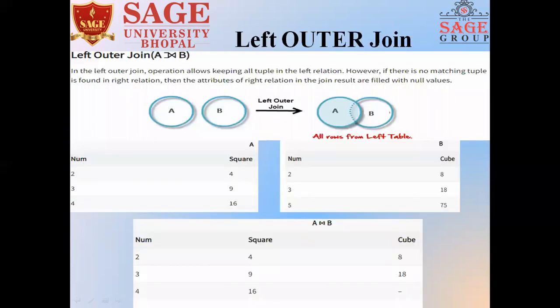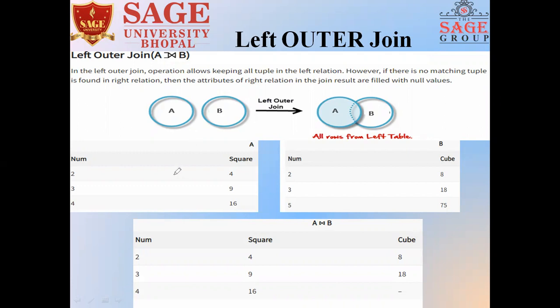What is the left outer join? In the left outer join operation, we keep all the tuples in the left relation. It is represented by a specific symbol. We keep all the tuples from the first relation, including those which are common between the two relations we are combining.